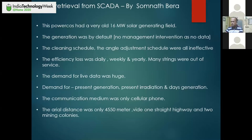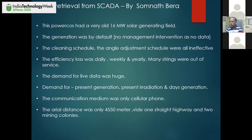Therefore, the loss of efficiency was cumulative every year, and every year it was failing in the MU target. So there was a demand for live data — for present generation (how much megawatt it is generating), present irradiation (how much solar radiation is available for harvesting). Suppose the solar generation available was 16 megawatt and the panels were cumulatively generating 16 megawatt — that would be 100%. But that was not the case. Neither the management had solar irradiation data at hand, nor the present level of generation.